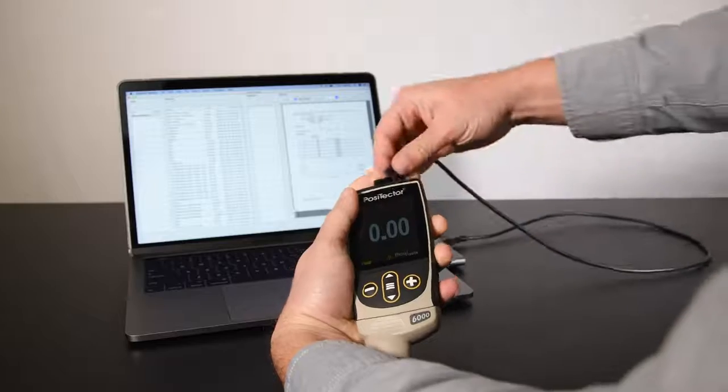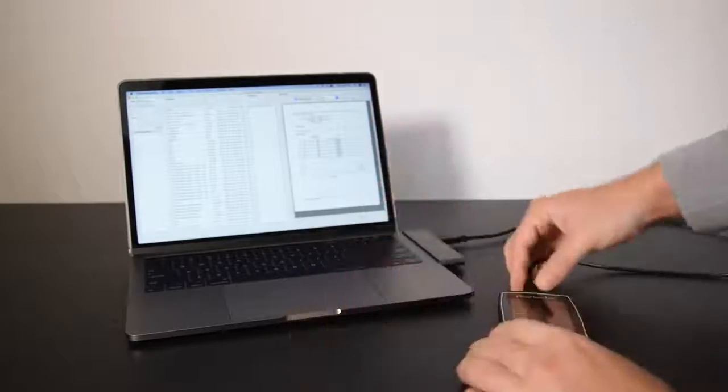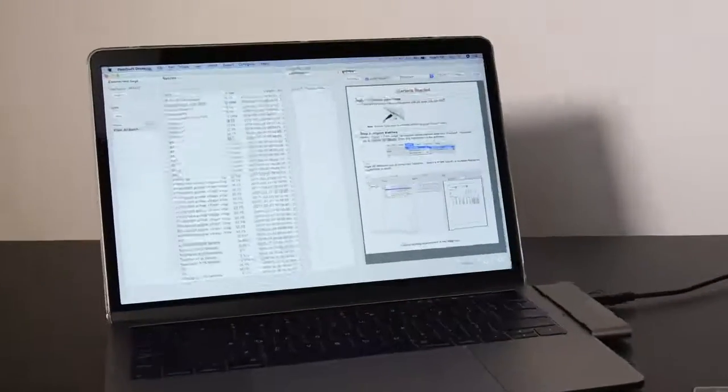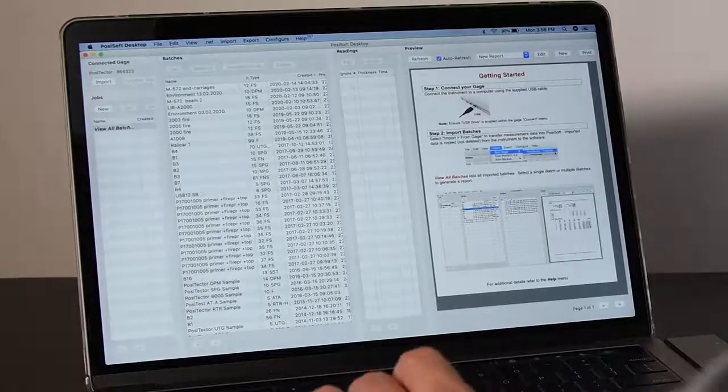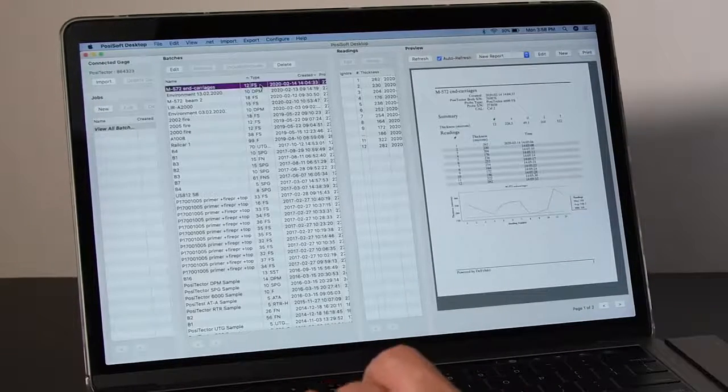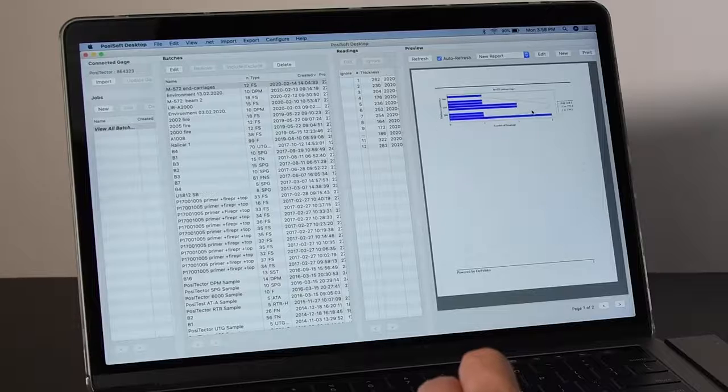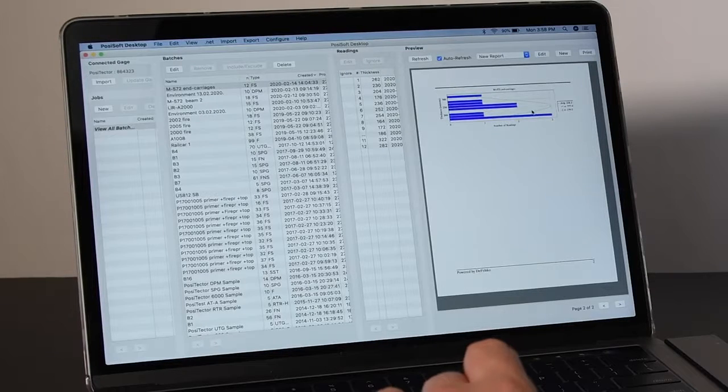Using the new heavy-duty USB-C connector and included cable, the new Positector can communicate with PosiSoft Desktop, the powerful, free, and easy-to-use solution for managing measurement data and creating custom, professional PDF reports.